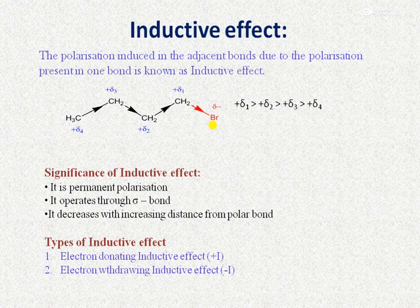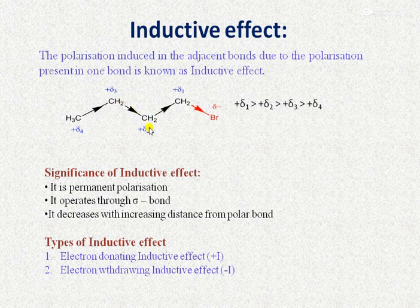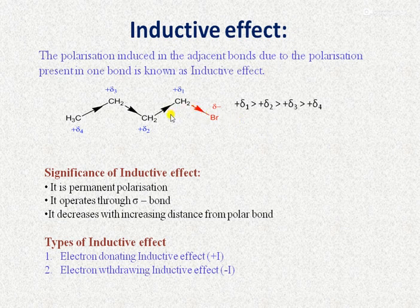When one atom is more electronegative, it acquires a partial negative charge while the other acquires a partial positive charge. For example, bromine is electronegative and pulls the electron pair, carrying a partial negative charge while carbon becomes electron-deficient. This electron-deficient carbon pulls electron density from adjacent carbons, and the polarization propagates through the sigma framework — this is the inductive effect. The intensity of the inductive effect decreases as distance from the polar bond increases.